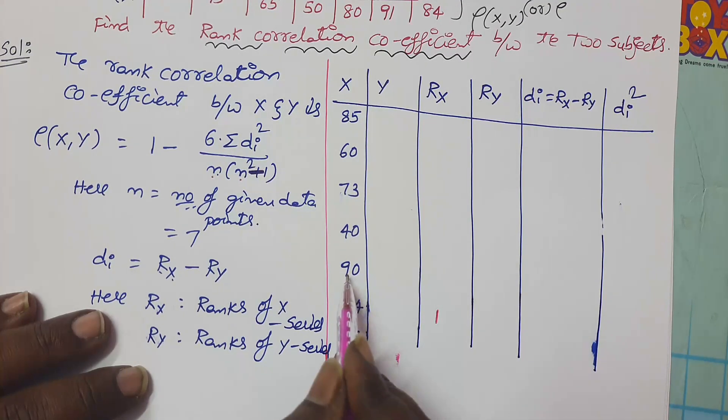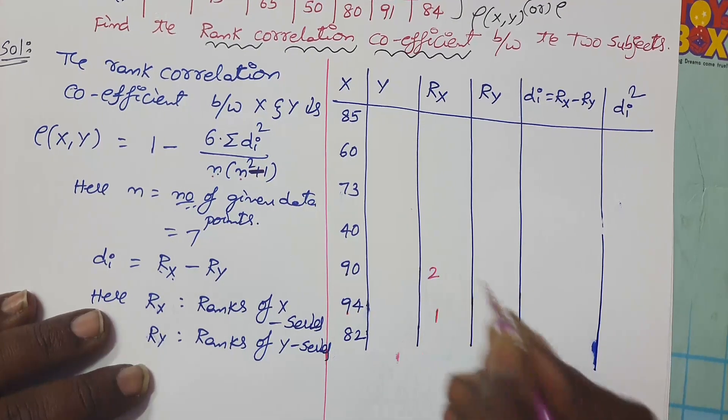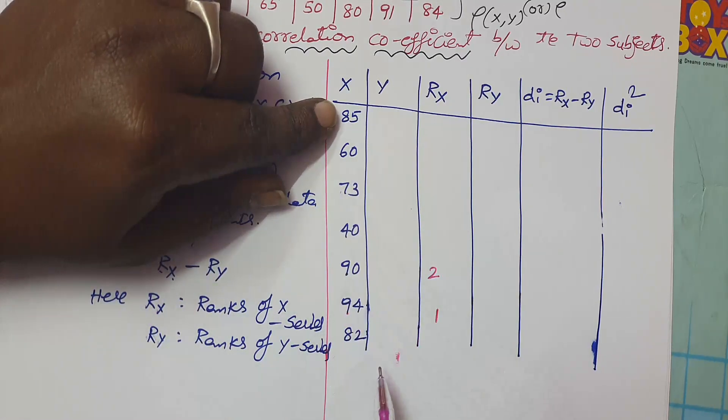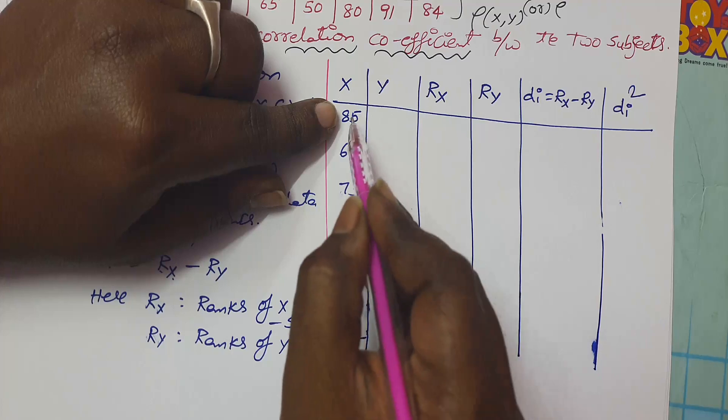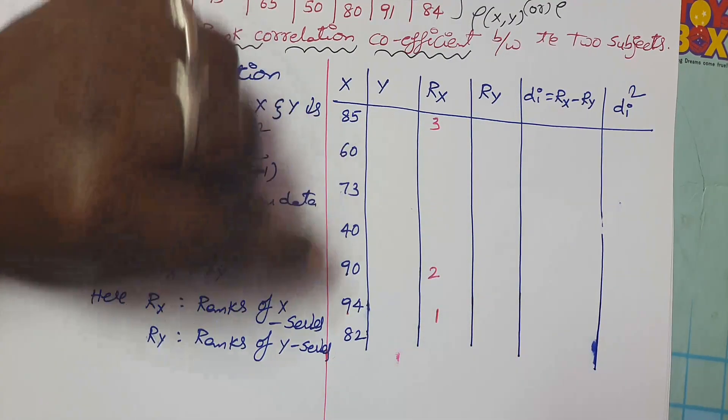What is the next highest mark? 90. This is the second rank. After that, next highest mark. Please observe the marks carefully and give the ranks from top to bottom. 85 is the next highest mark, which is rank 3. After that, 82. This is the fourth rank mark.